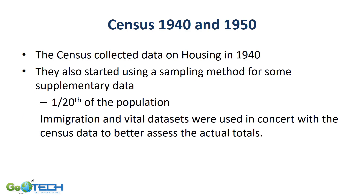The 1940 Census examined housing within the United States and introduced a sampling method to understand specific social and economic factors. By 1950, the United States started to use additional data sets — including immigration and vital data — to assess actual totals and get a more accurate picture of the population.